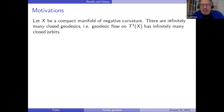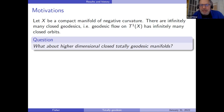Starting with very classical motivations: if I start with a compact manifold of negative curvature, it's always true that there are infinitely many closed geodesics. This is often said as the geodesic flow has infinitely many closed orbits. And this naive question you can ask is: what about higher-dimensional closed totally geodesic manifolds — what if I look for closed totally geodesic surfaces instead of curves?